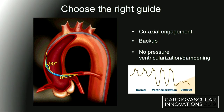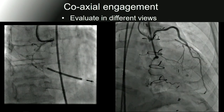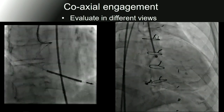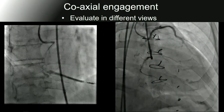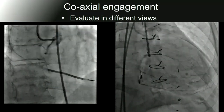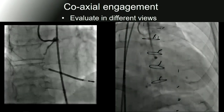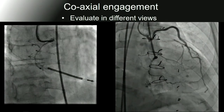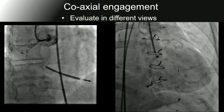I cannot stress enough how important this coaxial engagement is. Sometimes we forget about that, in particular when using an AL-1 for a right coronary artery. It looks good in the LAO projection, and then you move to RAO, and it looks like this — this is not coaxial. You want to get the scenario where the guide sits coaxial with the coronary. This will save a lot of trouble down the road.